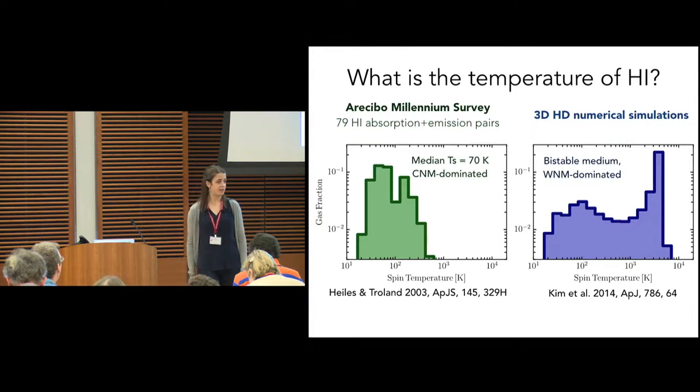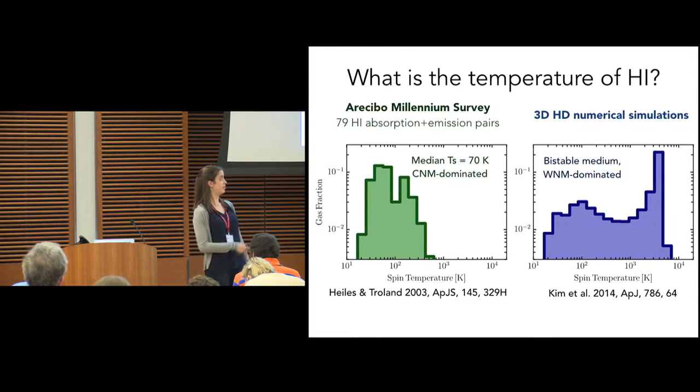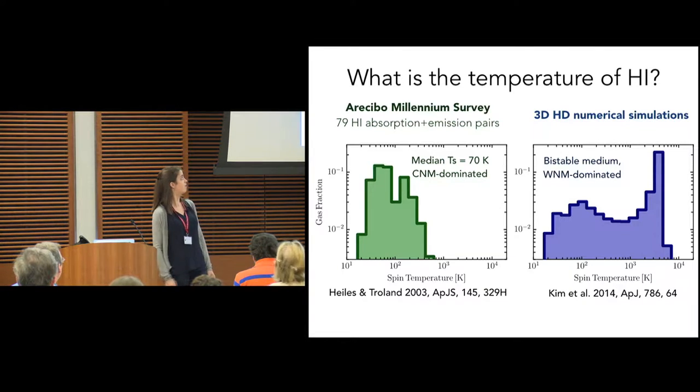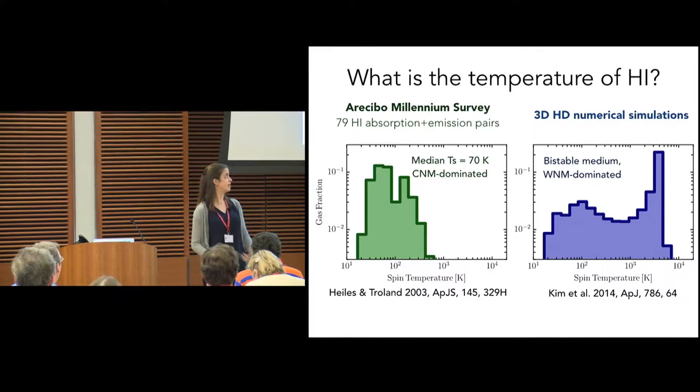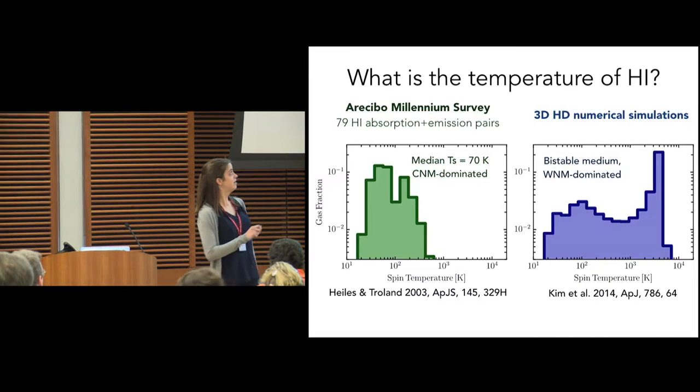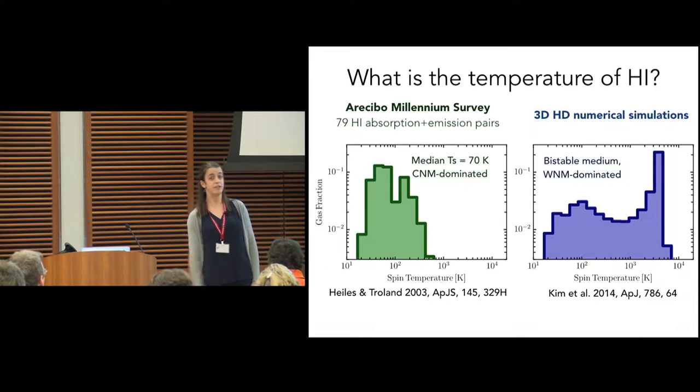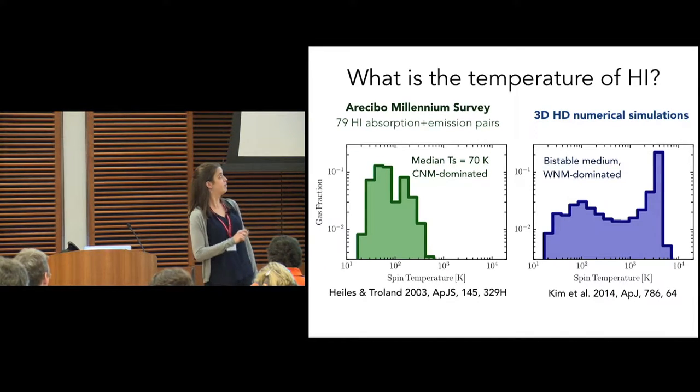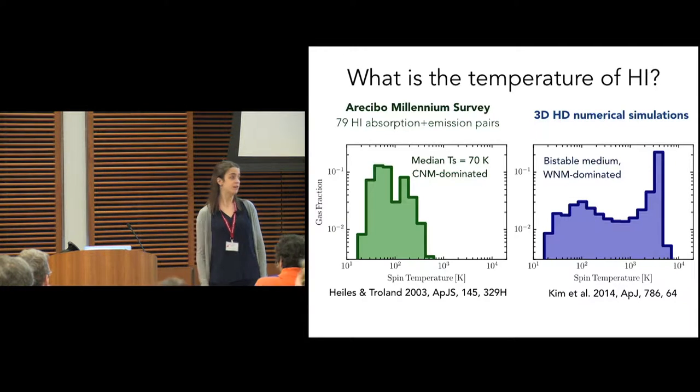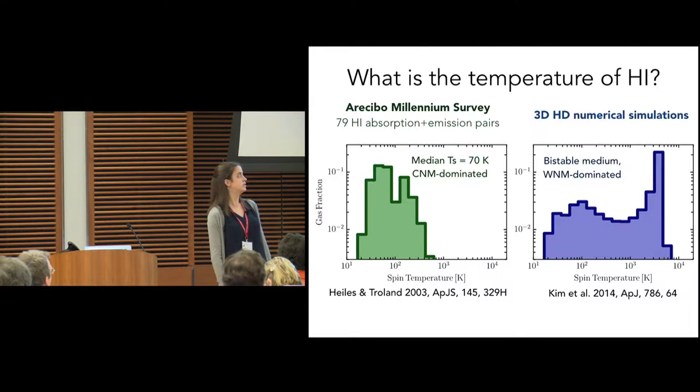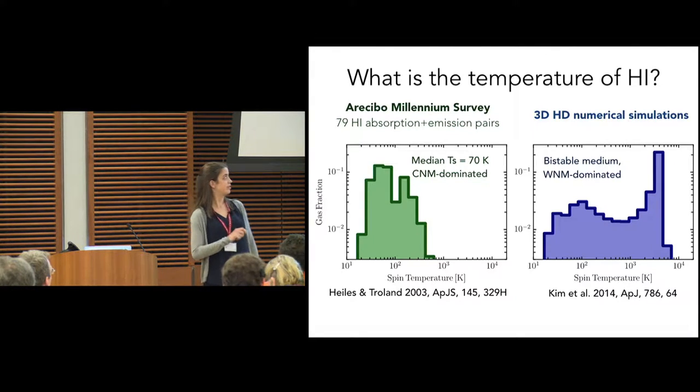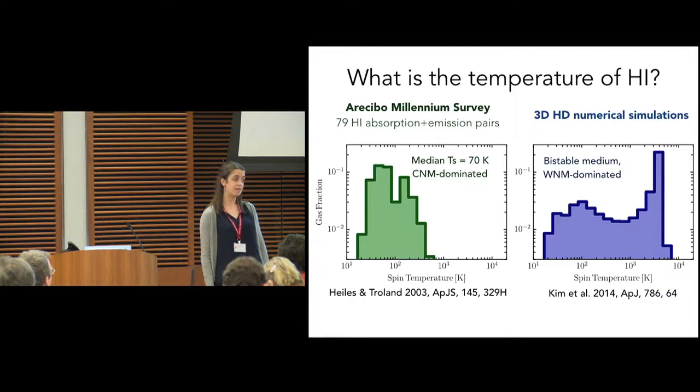Carl Heiles and Tom Troland did pioneering work on this. They studied almost 80 absorption and emission line pairs and found that H1 in the ISM has a median column density weighted temperature of about 70 degrees. These are the best constraints on temperatures that they were able to find. But if we look at numerical simulations, we see that the picture is a little different. We see that the ISM is dominated by warmer gas at thousands of degrees. So the question is, where is that material in our observations? Why has it not been recovered by the Millennium Survey?